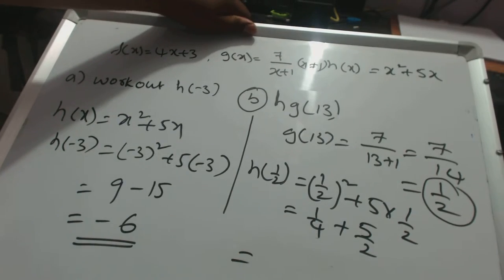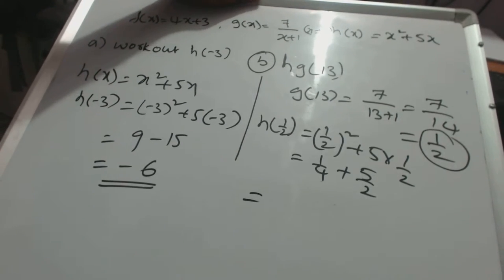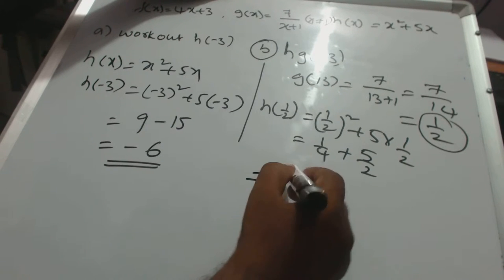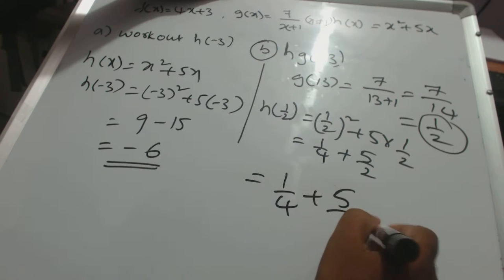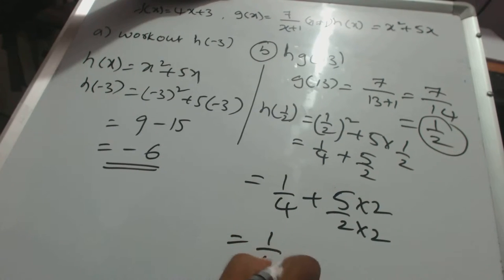Make it common denominator. Here 1 by 4 plus 5 by 2, you may have to multiply up and down with 2. So 1 by 4 plus 10 by 4, which is equal to 11 by 4.